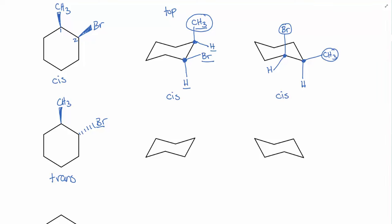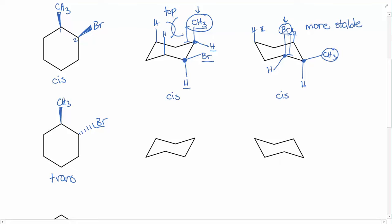Now, if we wanted to figure out which of these chair conformations was more stable, the more stable one is the one that puts the Br in the axial position rather than putting the CH3 in the axial position. That's because the C–Br bond is longer than the C–CH3 bond, and that puts it out of the way of the shorter C–H bonds. So this Br has very little interaction with the axial H's, whereas the CH3 in the axial position has a lot of steric interaction with those axial hydrogens. So the conformation with Br axial is more stable because the longer C–Br bond reduces steric interaction.